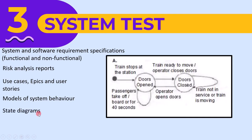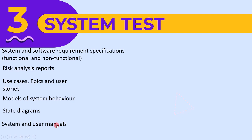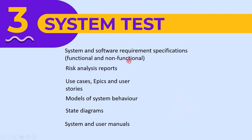The next requirement is a state diagram, which provides an abstract view of the different states of the software. Using this information, testers can write test cases for different states. This concept will be explained in more detail in chapter 4, where we will also solve some practical questions. The last requirement is the system and user manual, which lets us know how the system should be used.